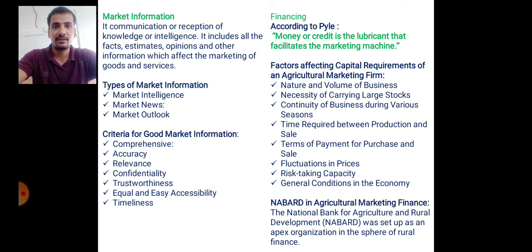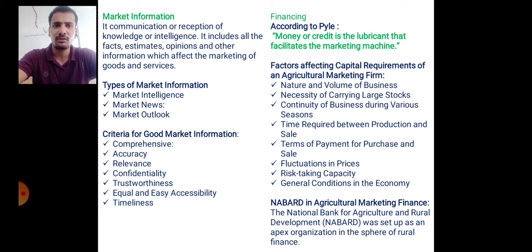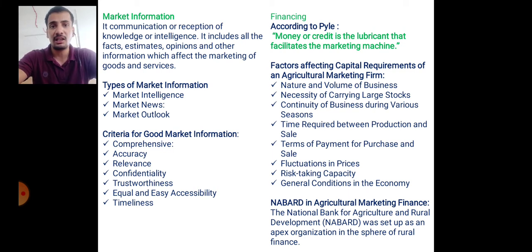The last topic of today's lecture is market information. Market information is knowledge or information about the market — the communication or reception of knowledge or intelligence. It may include facts, estimations, opinions, and other information which affect the marketing of goods and services. There are three types: market intelligence, which is based on historical or last year's data; market news, based on current data; and market outlook, which involves predictions for the future.